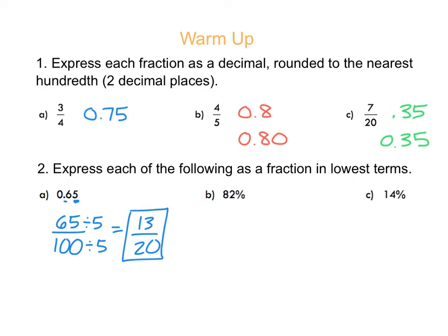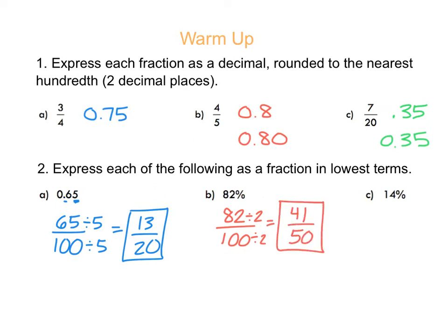If you're given a percentage, a percent just means a part of 100. So 82% would be 82 out of 100. Both 82 and 100 are even, so divide by 2: that gives 41 out of 50. Since 41 is a prime number, it doesn't reduce any further. Same thing with 14%: that's 14 out of 100. Divide by 2 to get 7 out of 50. That's simplified all the way because 7 is prime and doesn't go into 50.